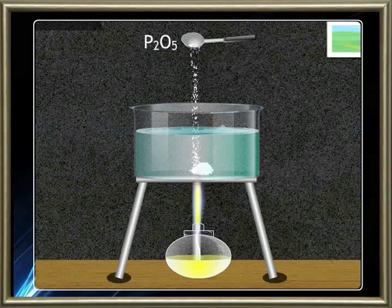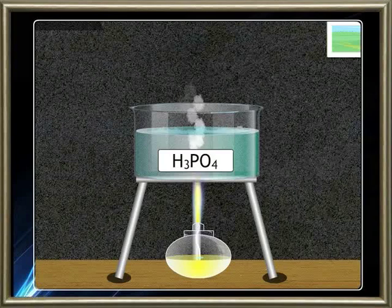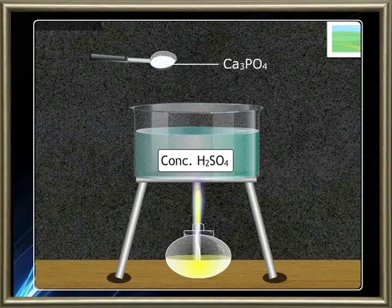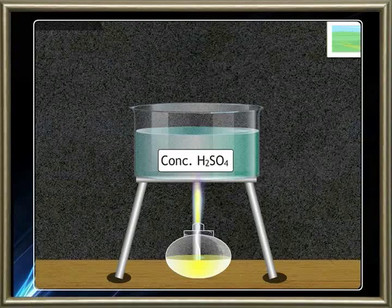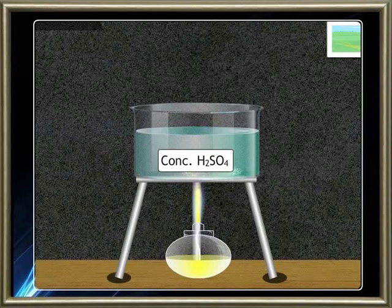Let us now talk about phosphoric acid. We can also call phosphoric acid orthophosphoric acid. The formula of phosphoric acid is H3PO4. Phosphoric acid is manufactured by dissolving phosphorus pentoxide in hot water. It is also formed by the action of calcium phosphate on concentrated sulfuric acid, thus forming calcium sulfate.